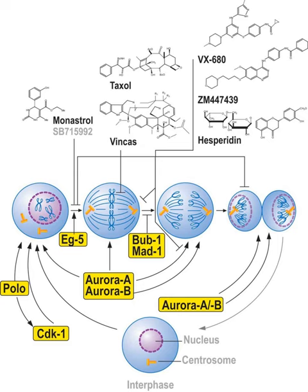Monostrol is a cell-permeable small molecule inhibitor discovered by Thomas U. Mayer in the lab of Tim Mitchison. Monostrol was shown to inhibit KINESIN5, a motor protein important for spindle bipolarity.